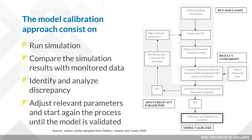The model validation answers the question: Have we built the right model? The model validation approach is composed of different steps. The first consists of running simulations considering the collected and available building characteristics. The second consists of comparing simulation results with available real operational data, using graphical or mathematical methods against utility-level measurements. The third consists of parameter modification: if a satisfactory agreement is not obtained, the relevant model parameters should be adjusted several times until the model is calibrated and thus validated.